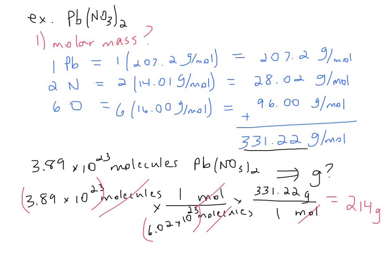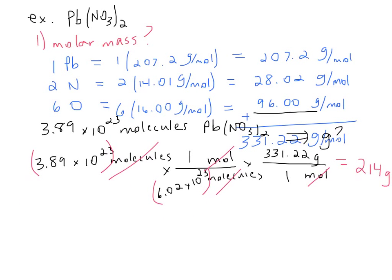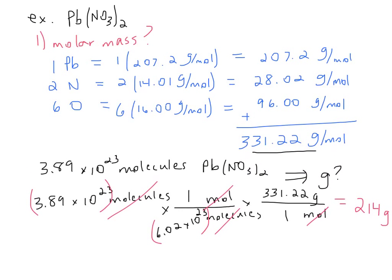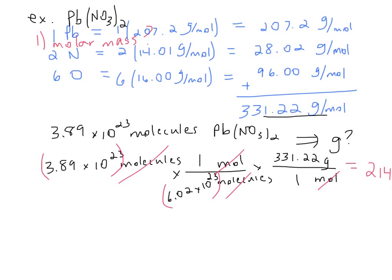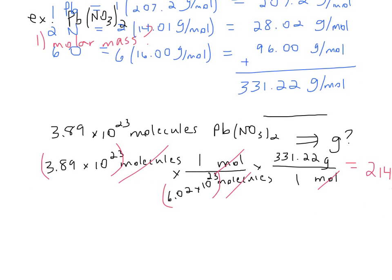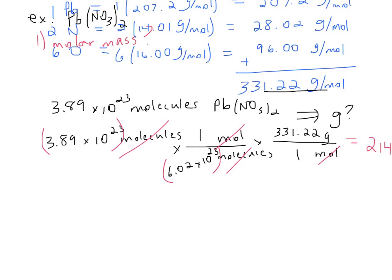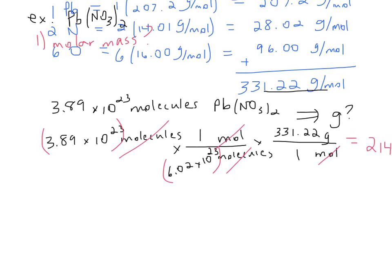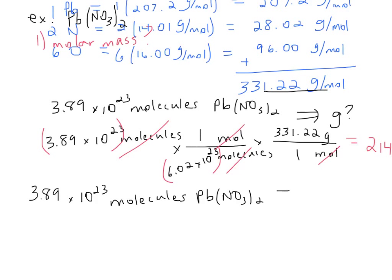Now let's say I wanted to solve a slightly different problem. In 3.89 times 10 to the 23rd molecules of Pb(NO3)2, how many nitrogen atoms do we have?